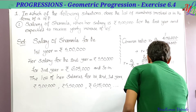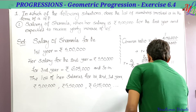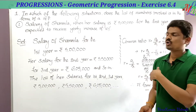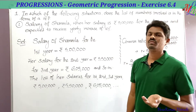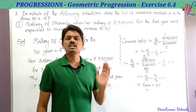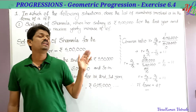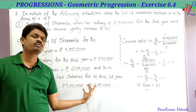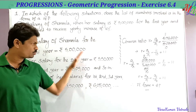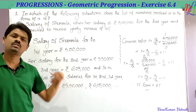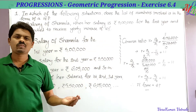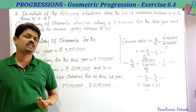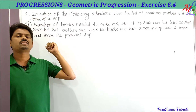Since the common ratio is equal, it forms a GP — that is, a geometric progression. These situation-based problems are very important, as they are asked for four marks. The key step is to first write the list of numbers involved in the given situation, then check the common ratio.